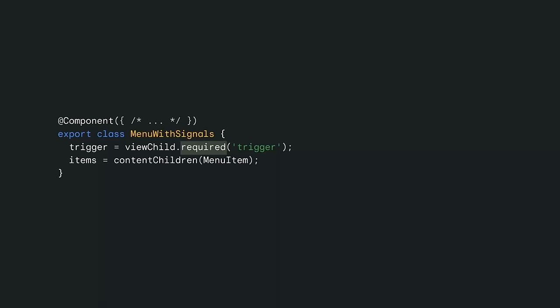With these new APIs, you can now mark a query as required. If a required query doesn't have a result, Angular will report an error. And because it will report this error, the API can remove undefined from the type of the result, since Angular guarantees that it's there. That's definitely going to allow developers to write safer code.